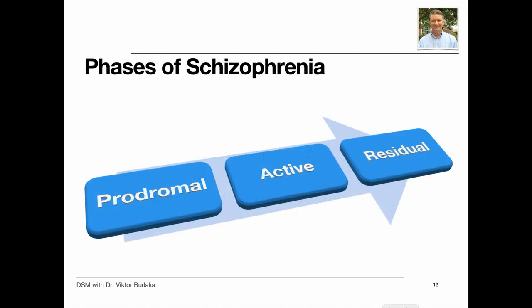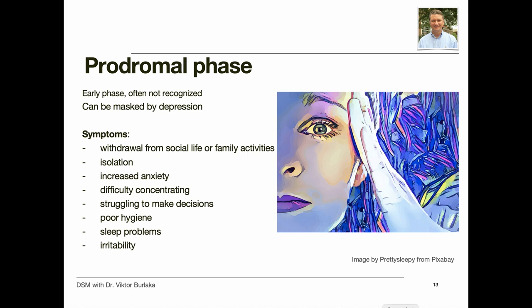Schizophrenia is a chronic mental illness that affects about one percent of the population, although the condition's exact prevalence is hard to obtain. The three phases of schizophrenia include prodromal, active, and residual phases. The prodromal stage is often not recognized until after the illness has progressed, and the first signs and symptoms may be overlooked because they are common to many other conditions such as depression.